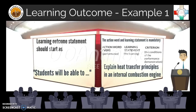Learning outcome statement Example 1: 'The student will be able to explain heat transfer principles in an internal combustion engine.' Here, 'explain' is the action verb, and 'heat transfer principles in an internal combustion engine' is the learning statement. Since criterion is optional, it is not defined here.